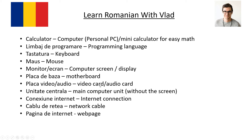You also have the video card — 'placă video' — and the audio card — 'placă audio' — with brands like Nvidia. The main computer unit, the big box without the screen where all the components are inside, is called 'unitate centrală.' So in a shop you can say: I need a 'unitate centrală,' a 'monitor,' a keyboard, and a mouse — and you're good to go.